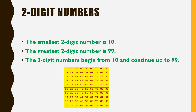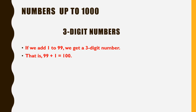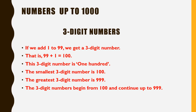Now come to the topic of 3-digit numbers. If we add 1 to 99, we get a 3-digit number: 99 plus 1 is equal to 100. The smallest 3-digit number is 100, which comes just after 99, and the greatest 3-digit number is 999. The 3-digit numbers begin from 100 and continue up to 999.